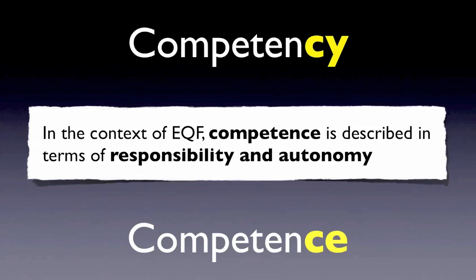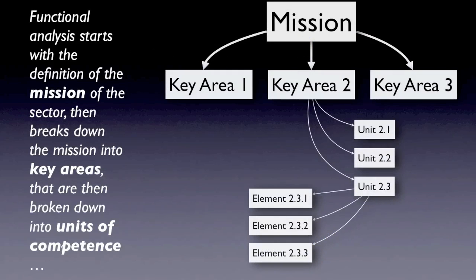In the context of EQF, competence is described in terms of responsibility and autonomy. The difference between competence and competency: competency is really about knowledge, skills, attitudes, and values — it is all that together — while competence will tell that you are responsible for the work of others or for a larger budget. It is the level of responsibility and autonomy that we use the term competence, as opposed to competency. The functional analysis to develop standards of competence starts with the definition of the mission of a sector, then broken down into key areas, units of competencies, elements of competencies, performance criteria, knowledge and understanding, and examples of evidence.